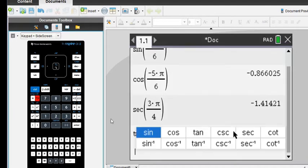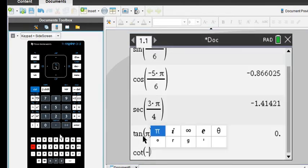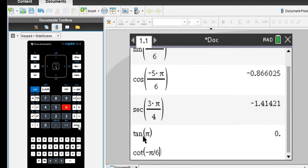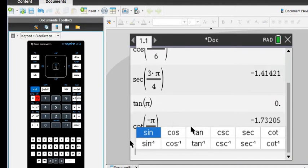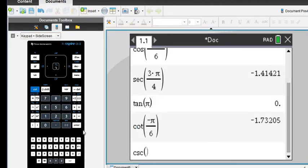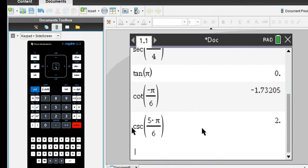Cotangent is our next one. We would just select cotangent negative π over 6. For this one, we would round to four decimal places. And again, if you were looking for the exact answer, you would have to use the unit circle because the calculator is only going to give you the approximate answer. And then the last one we want to work with is cosecant. We would go in and find cosecant 5π divided by 6.